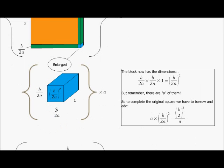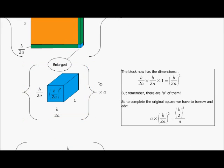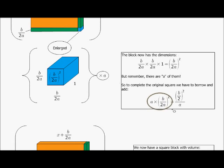So if I enlarge it, this is what that square would look like. This little blue block that I went and borrowed somewhere now has the dimensions of b over 2a by b over 2a by 1. And if I just simplify that, that is half of b divided by a, squared. But remember, we don't just borrow one of these. I borrow one for each orange sheet that I originally had, and I have a orange sheets. So I have to borrow a of them.